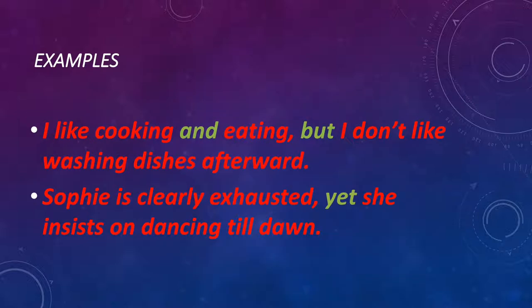Let us understand with the help of examples. I like cooking and eating, but I don't like washing dishes afterward. In this sentence, 'and' and 'but' are both conjunctions, as these two words are connecting two different sentences — that is, 'I like cooking' and 'I like eating.'